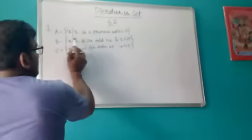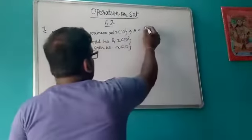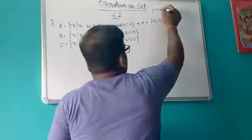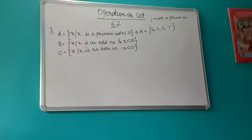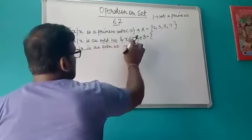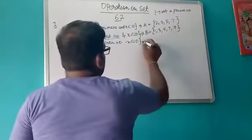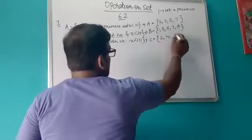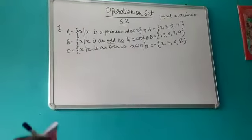This set is given in set-builder form, so first write the elements. All prime numbers less than 10: {2, 3, 5, 7}. Remember, 1 is not a prime number — never include 1 in the prime number list. Set B contains all odd numbers less than 10: {1, 3, 5, 7, 9}. Set C contains all even numbers less than 10: {2, 4, 6, 8}. We have now written all three sets in roster form.